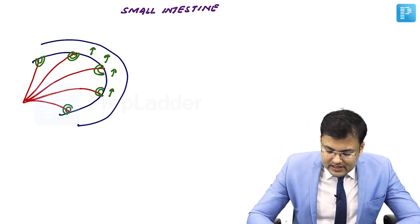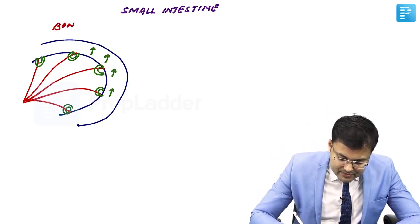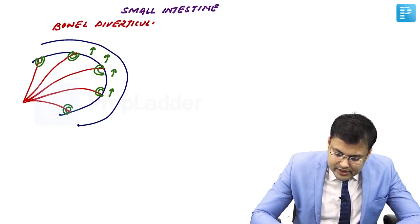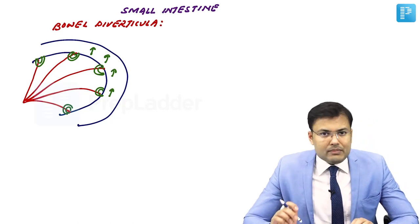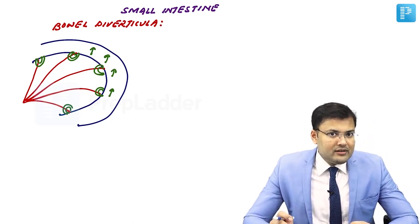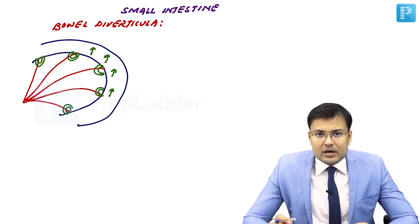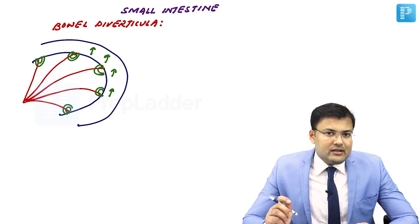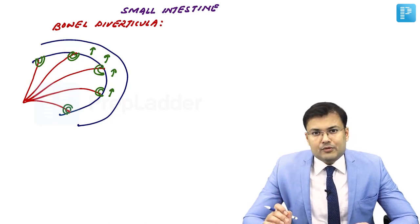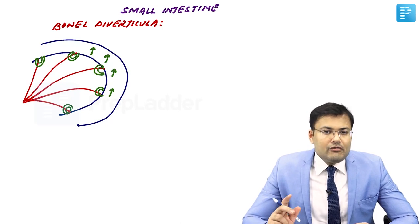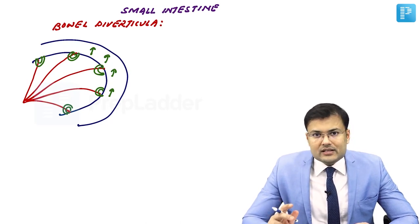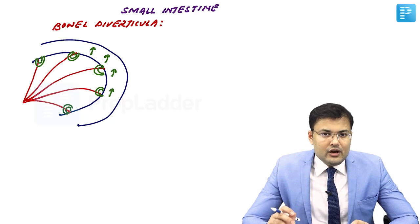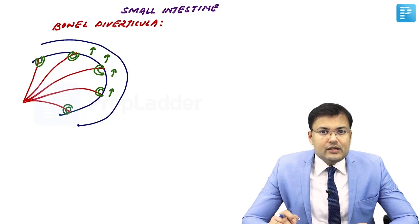This is the etiopathogenesis of bowel diverticula — this is how formation of bowel diverticula occurs in majority of cases. Most bowel diverticula are either congenital or acquired, single or multiple. They are classified as true or false: true means containing all three layers — mucosa, submucosa, and muscularis propria. False means containing only two layers — mucosa and submucosa. Most bowel diverticula contain only mucosa and submucosa, so they are false diverticula.